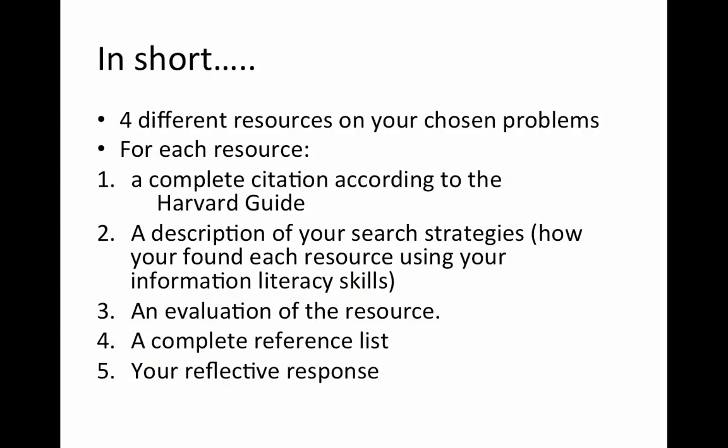In short, for your annotated bibliography you need to have researched and located four different types of resources relating to our topic about issues that the Australian lifestyle has caused for our natural environment. For each of those four resources you need a complete citation according to the Harvard referencing guide, a description of your search strategy showing how you found each resource using your information literacy skills, and an evaluation of the resource. At the end you'll have a complete reference list with four entries and a reflective response.